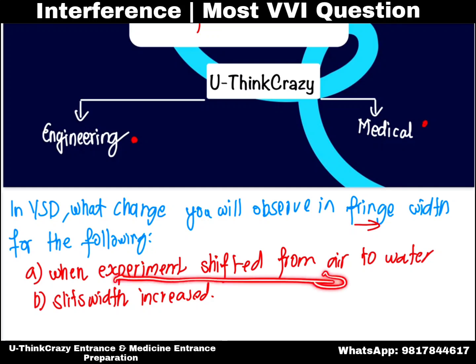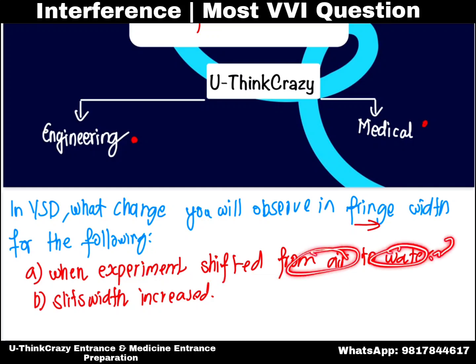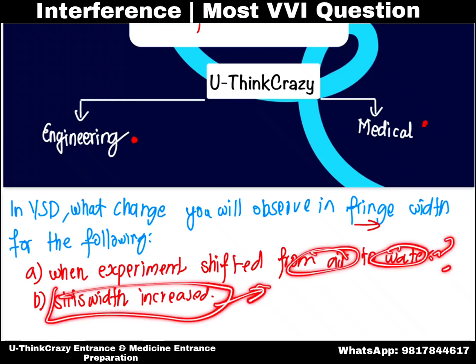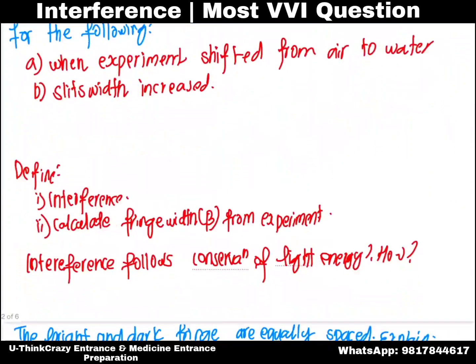When the experiment is shifted from air to water, what happens to the fringe width? How does the slit width or the separation between slits affect the fringe width formula?